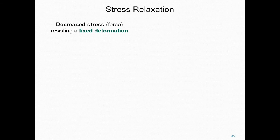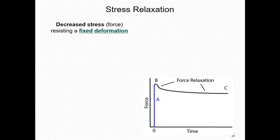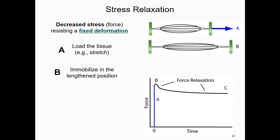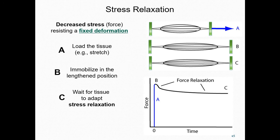The next mechanical property we're going to look at is stress relaxation, which is a dynamical property — meaning it's a property that changes over time. Stress relaxation captures the observation that if you stretch a material and hold it in a fixed stretch position, you'll see a decrease in its resisting force over the time it's stretched. Here we see a graph capturing stress relaxation in tissue. In the blue part of the graph, we see the resistive force that results when we initially stretch the tissue. Once the tissue is stretched and held in the lengthened position, over time we see that the tissue adapts to the imposed stress and the resistance force reduces — this relaxing is what we mean by stress relaxation.